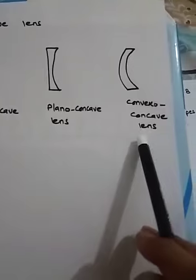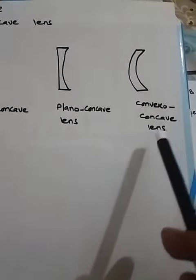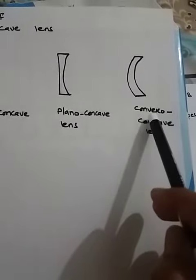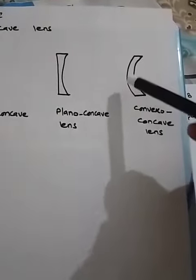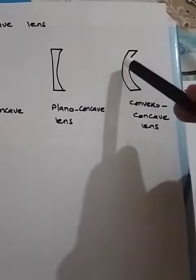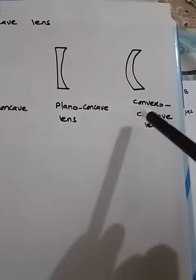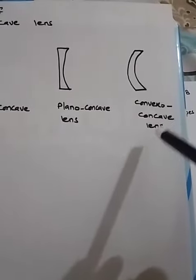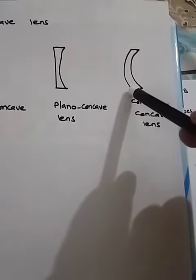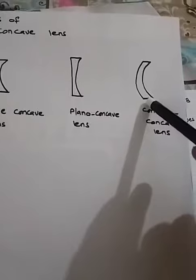The third type of the concave lens is convexo concave lens. 'Convexo' — from the name we get the idea that one side is curved outwards, and 'concave' means the other side is curved inwards. So, a convexo concave lens is one in which one side is curved outwards and the other side is curved inwards.